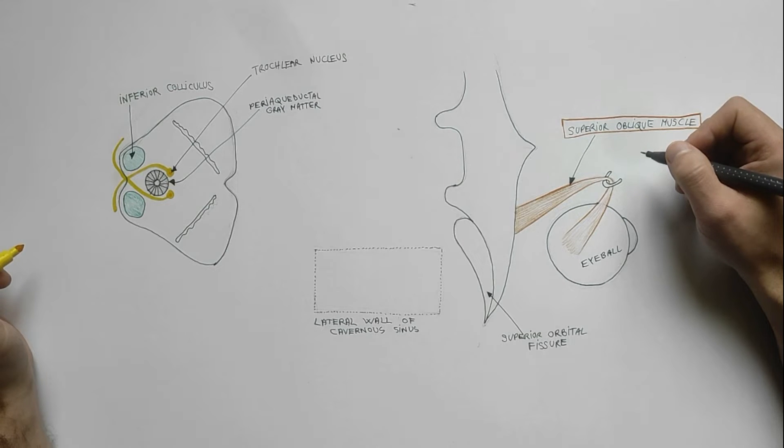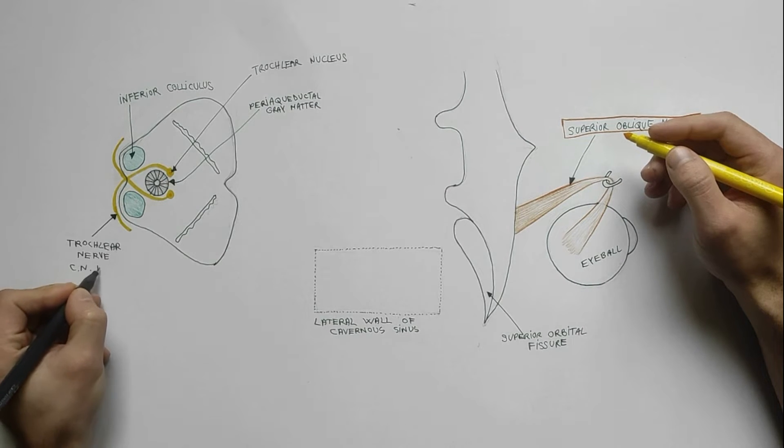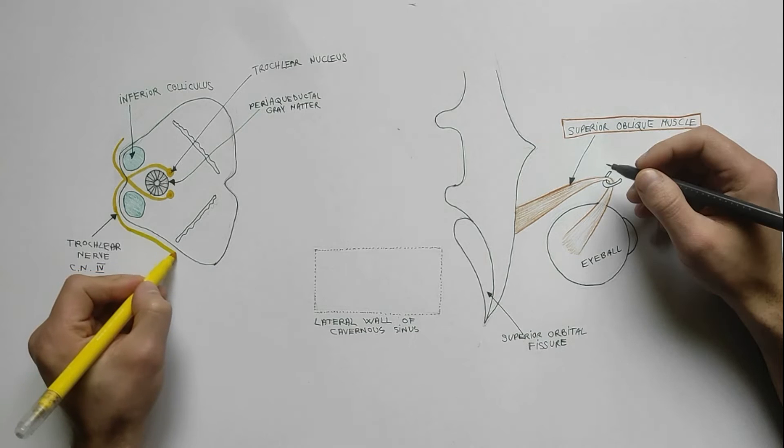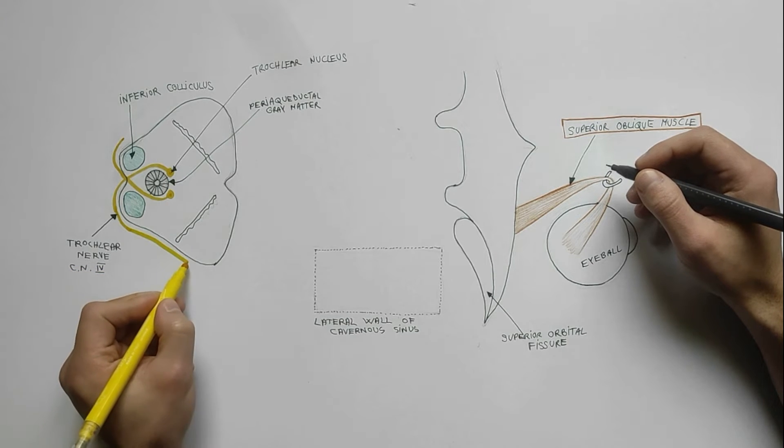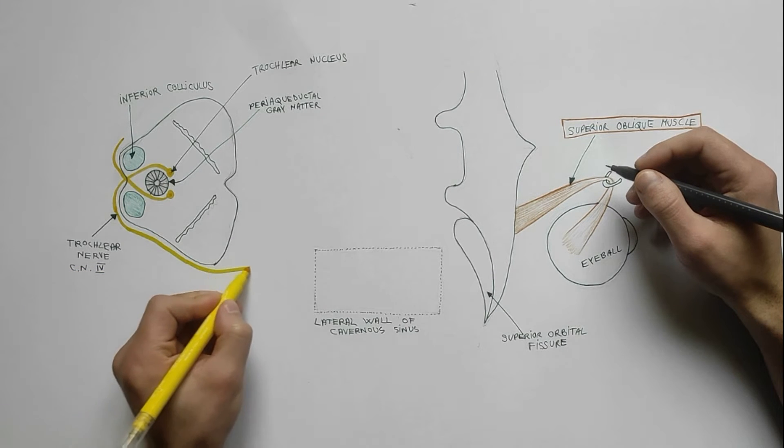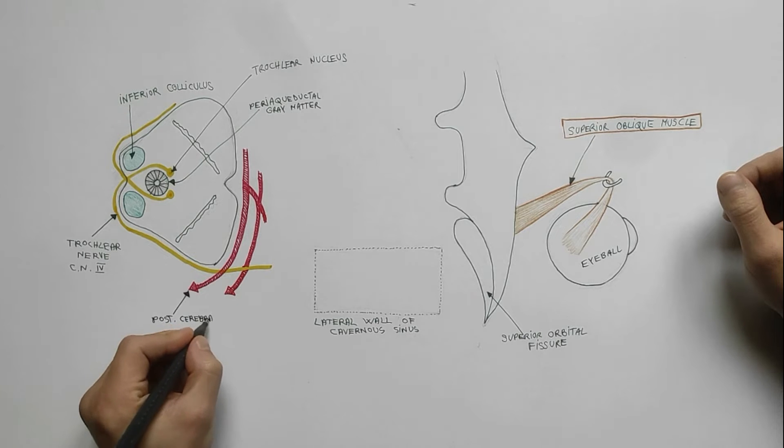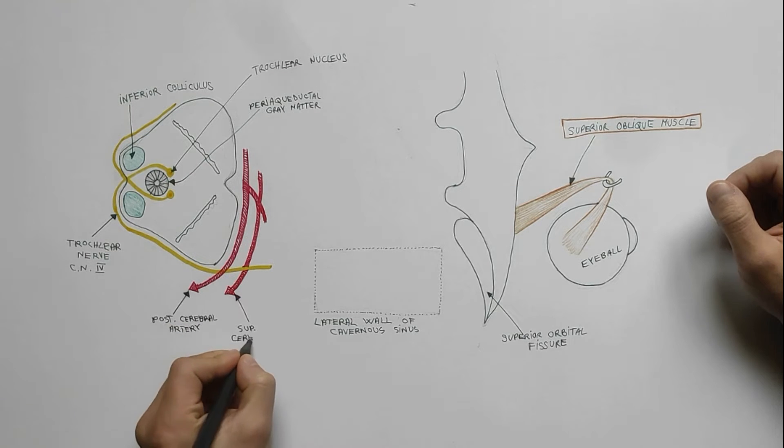The axons form cranial nerve IV, or the trochlear nerve. The nerve curves ventrally around the cerebral peduncle to pass between the posterior cerebral artery and superior cerebellar artery.